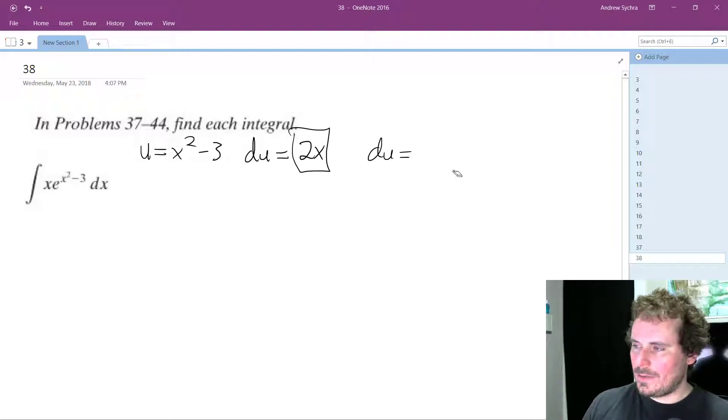So I should actually write it like this. And actually, that's still wrong because there's an x factor in there. It's actually equal to 1 half dx.